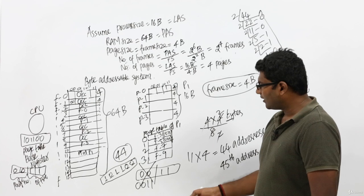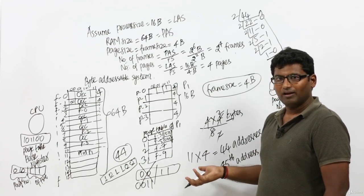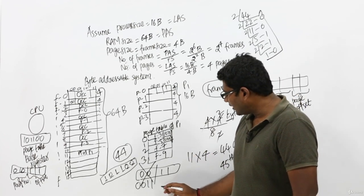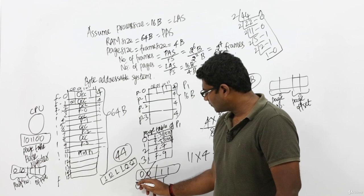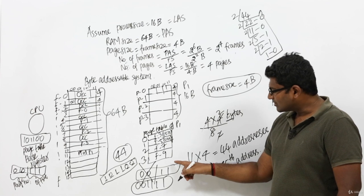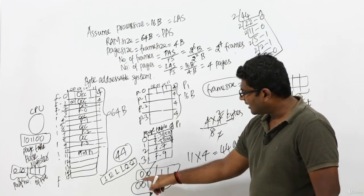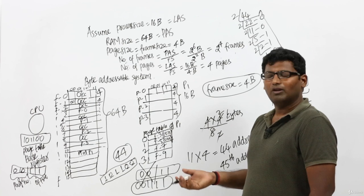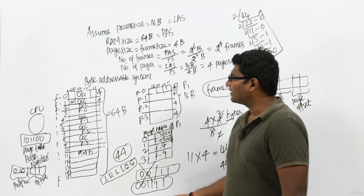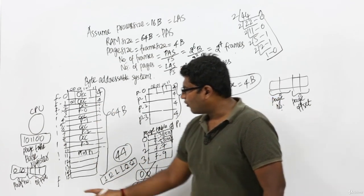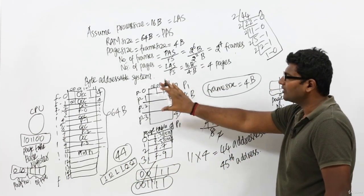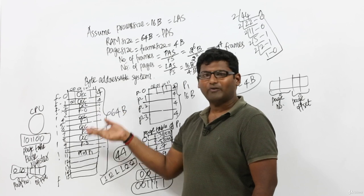Now we have a 6-bit physical address because our RAM size is 64 bytes, requiring 6 bits. Within these 6 bits, the first 4 bits indicate the frame number (since we have 16 frames) and the last 2 bits indicate the frame offset. Using this frame number, the CPU goes to the third frame in RAM. After reaching the third frame, it uses the offset to identify the exact byte — the offset indicates 11 (decimal 3), so it takes the last byte of that frame.